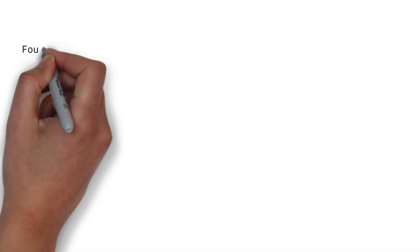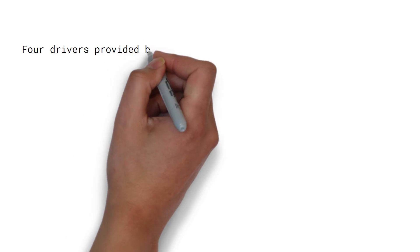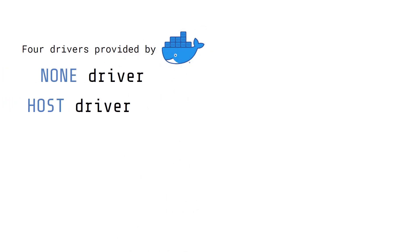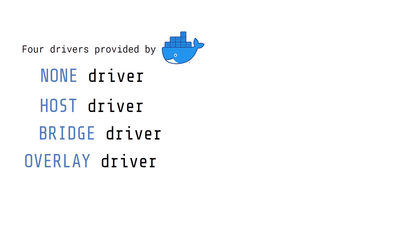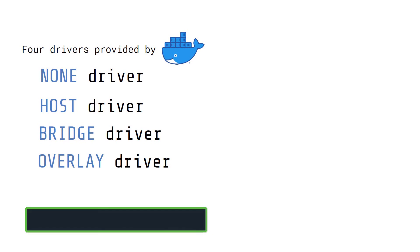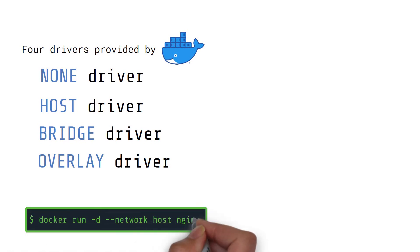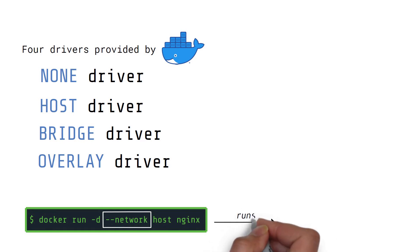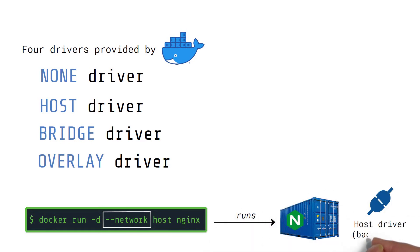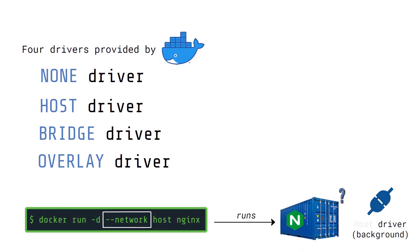The four out-of-the-box network drivers that come with Docker are none, host, bridge, and overlay. When running a container, the network driver can be specified using the network option for the docker run command. This command runs an nginx container using the host driver in the background. It is interesting to note that a container is generally unaware of the network driver it uses, except when using the none driver.